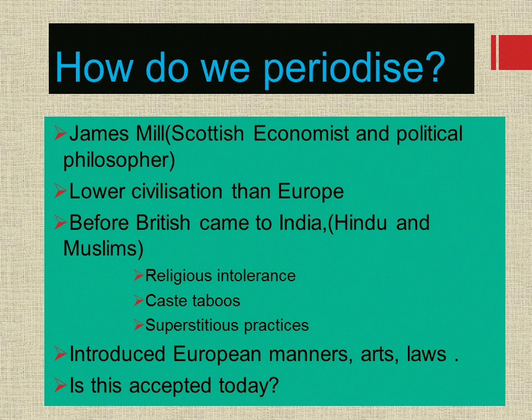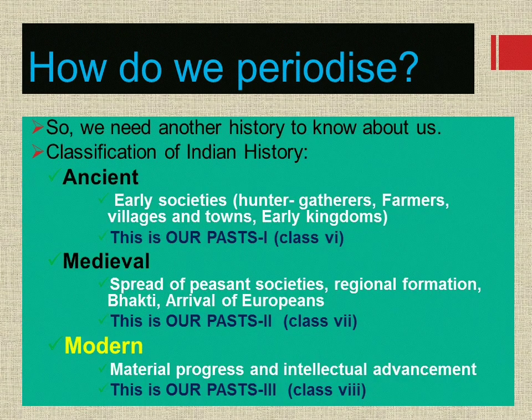Mill considered that India had a lower civilization than Europe. He believed that before the British came to India, Hindus and Muslims fought together, so we had religious intolerance, caste disputes, and superstitious practices. So the British introduced European manners, arts and laws. Is that accepted today? We need another kind of history to know about ourselves. Indian historians classified Indian history into Ancient, Medieval and Modern.